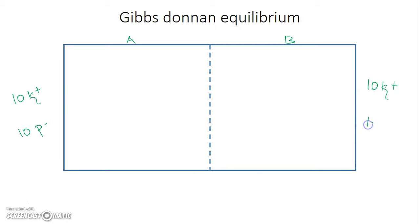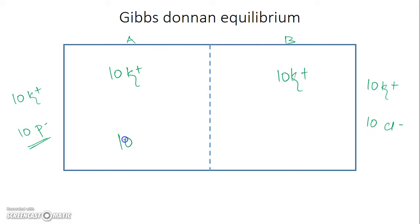On side B we add 10 potassium ions and 10 permeable ions like chloride. The membrane is permeable to all ions except the protein. So initially we have 10 potassium and 10 protein anions on side A — the protein is impermeable and will stay only on side A — and 10 chloride ions on side B.